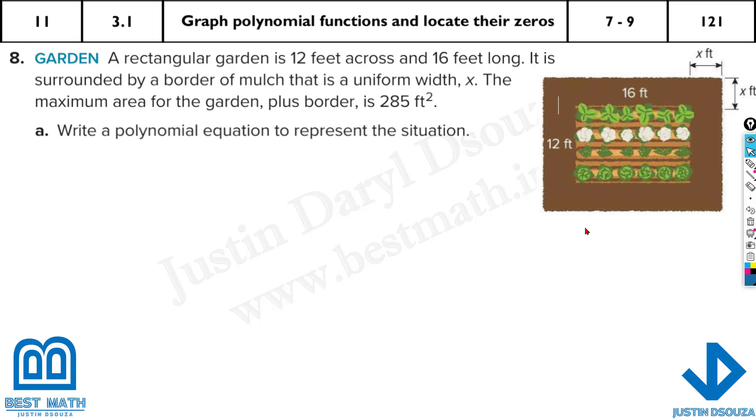Similarly, we have another problem. Please try this by yourselves and then look at the explanation. A rectangular garden is 12 feet across and 16 feet long. It is surrounded by a border of mulch that is uniform width x. This mulch is x. That means what is the actual height? The garden is 12, but we have x on each side. Same thing here for length.